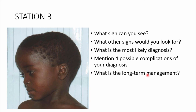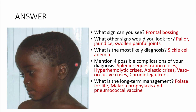Looking at this picture, this child has frontal bossing, which is very typical in sickle cell patients. This is most likely sickle cell anemia. Other signs to look for include pallor — due to hemolysis of red blood cells causing anemia — jaundice, and swollen painful joints.